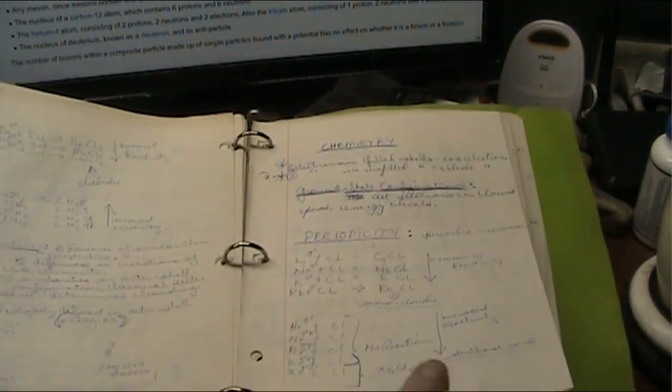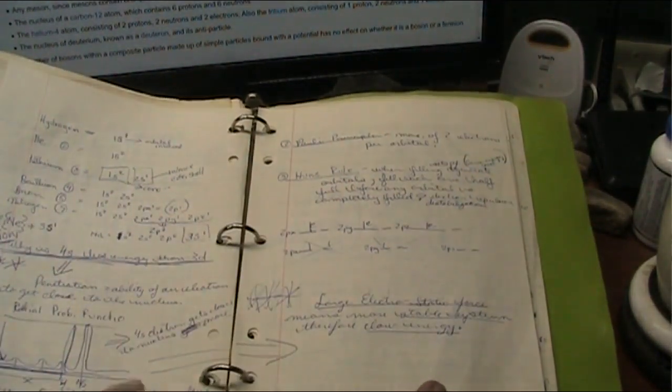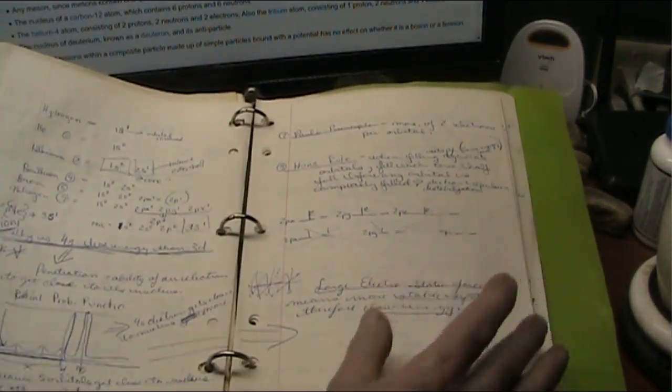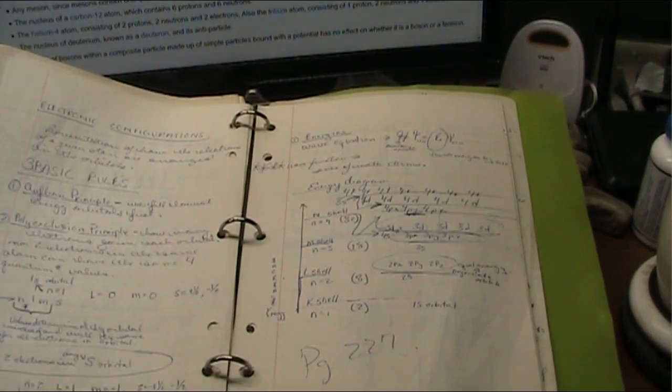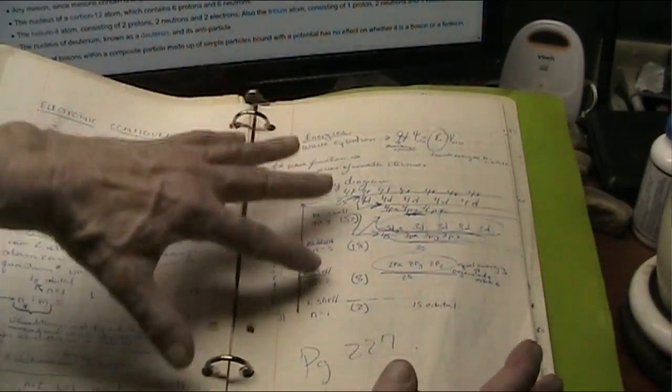And then we get into chemistry. And then I wanted to prove every single thing that they were talking about. The Pauli principle, the Huns principle, all these different assumptions they made, you know, Aufbau principle, Pauli exclusion principle, how energy transfers are done and why they move.